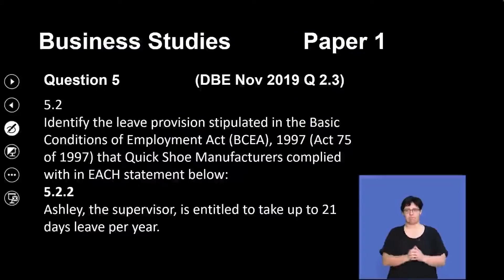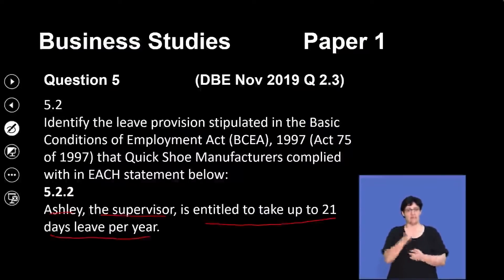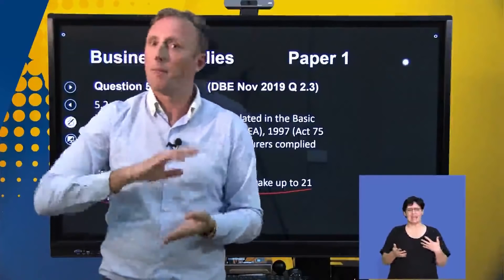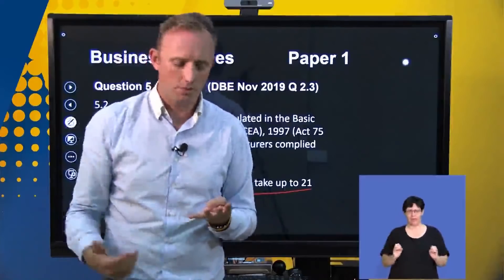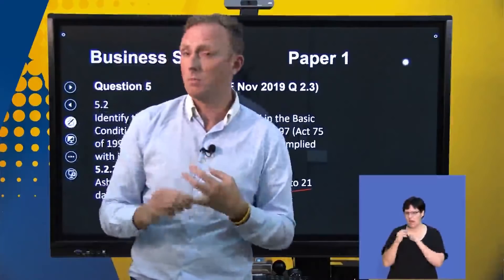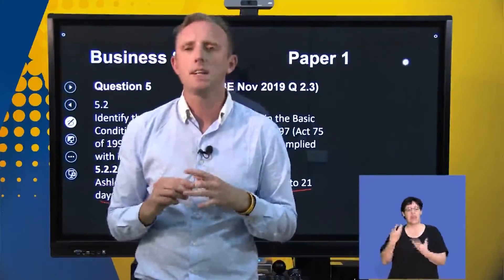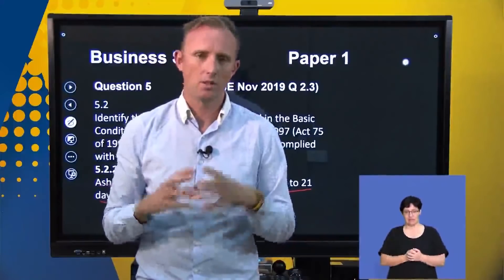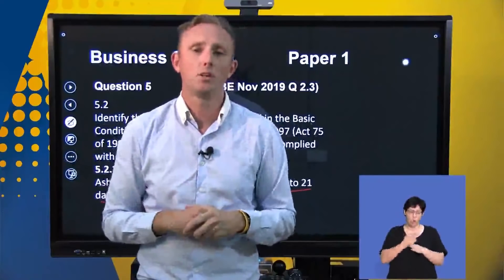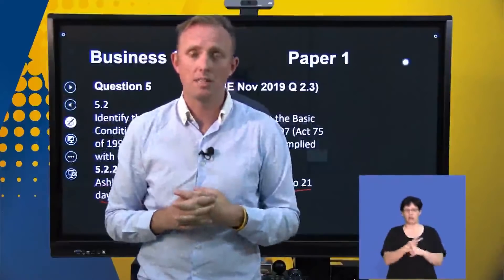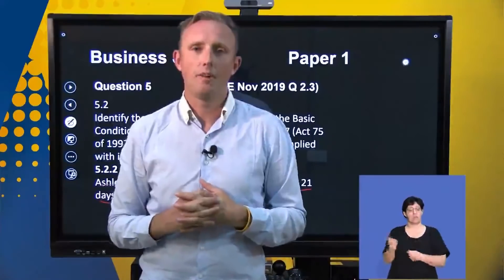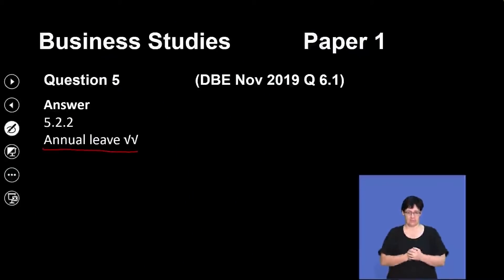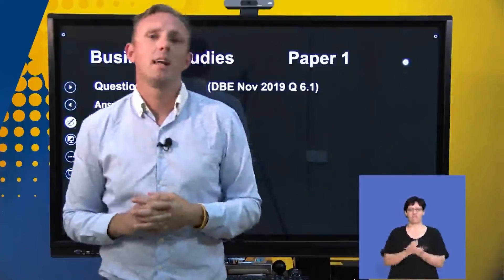The next statement: Ashley the supervisor is entitled to take up to 21 days leave per year. It's not mentioning anything about him being sick — no sick leave — and nothing about family responsibility leave. It's simply saying he is entitled to 21 days of leave. The law states that everyone's entitled to that leave because we don't want to work everyone to the bone, otherwise we'll lose out on productivity. The type of leave here is annual leave — leave that everyone is entitled to for working the entire year.